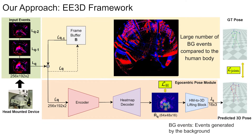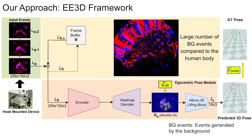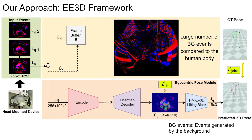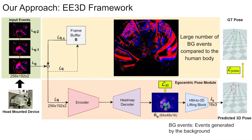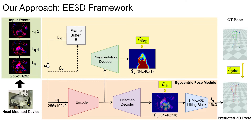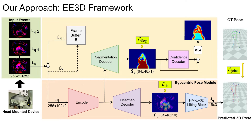The head-mounted device generates a considerable number of background events compared to those from the human body due to the high mobility of the head. To address this and mitigate spurious estimates from background noise, we utilize a segmentation decoder to generate human body masks. Confidence maps are then created for events attributed to the human body using the mask. By multiplying the confidence map with the event history, we obtain a human-weighted event history, which is added to the current LNES frame, emphasizing human-related events while suppressing background noise, serving as input to our network.